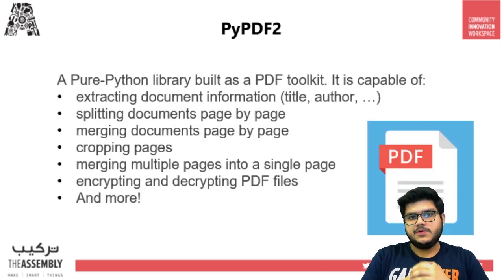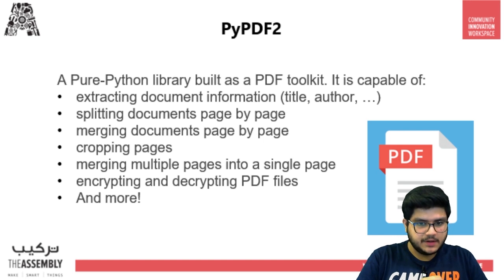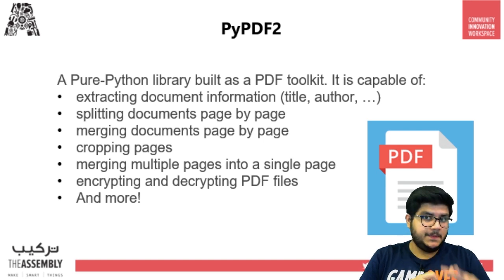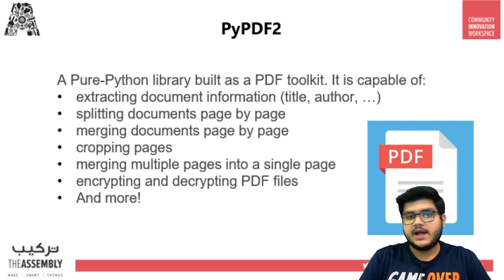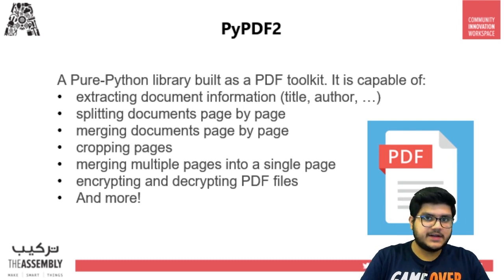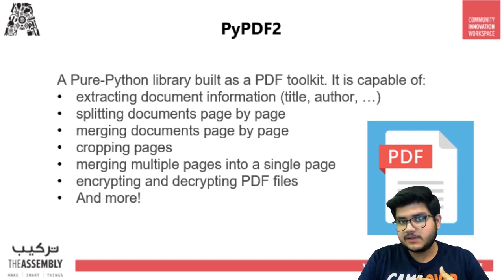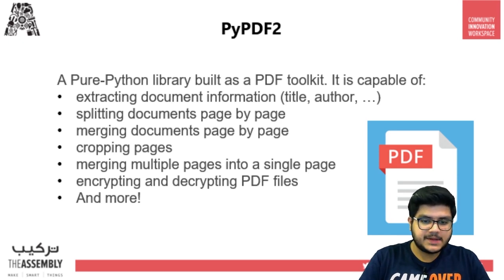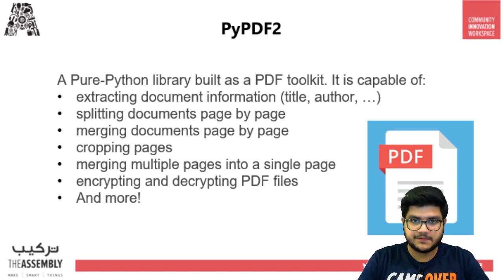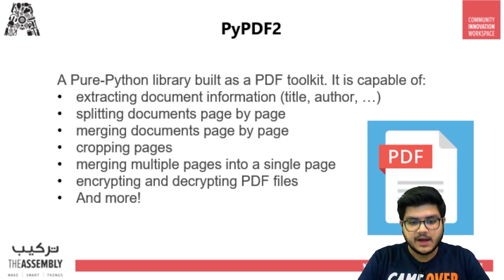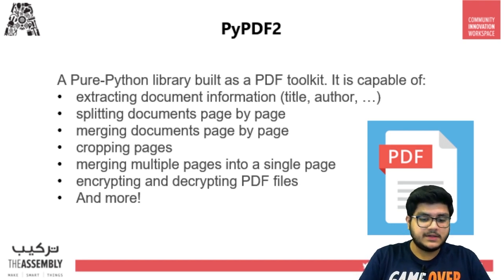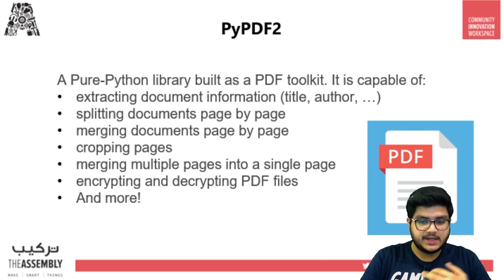The second library we'll be using is called PyPDF2, and it is a pure Python library built as a PDF toolkit. It has a lot of functionalities like extracting text from the PDF, splitting documents page by page, cropping pages, etc. Being pure Python, it should run on any Python platform without any dependencies on external libraries.